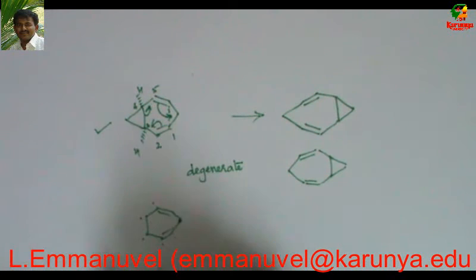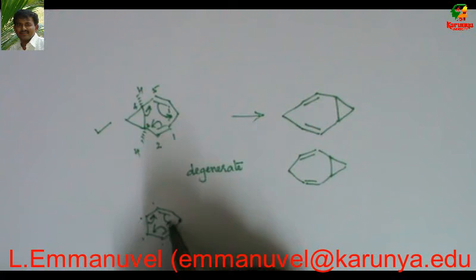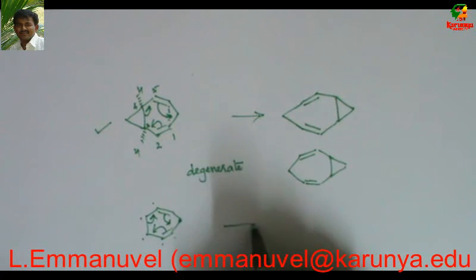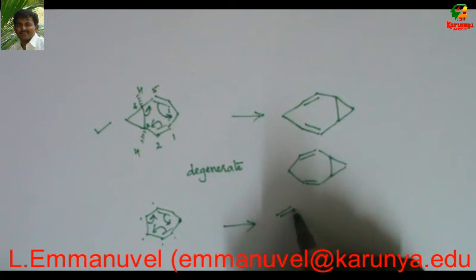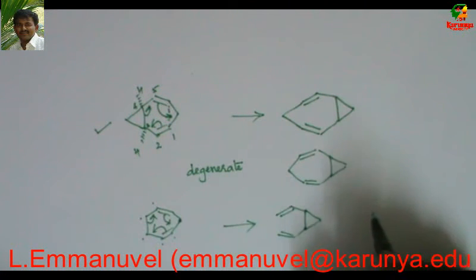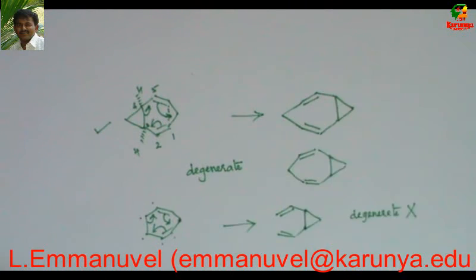It is 1,5-diene. It can undergo cope rearrangement. And what we get is a product like this. So this is not degenerate cope rearrangement.